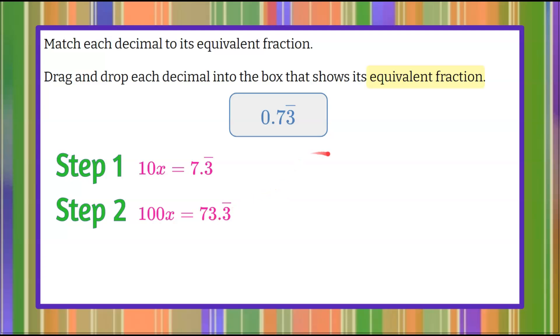So now, step 3, we're going to subtract. We're going to take our 100x equals 73.3 repeating. We're going to subtract 10x equals 7.3 repeating, noticing that I've isolated the 0.3 repeating. All right, 100x subtract 10x is 90x, and 73 subtract 7 is 66, and our decimal that repeats, our digits that repeat, are eliminated.